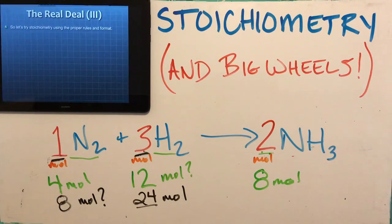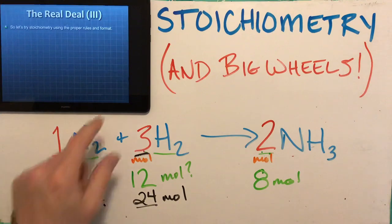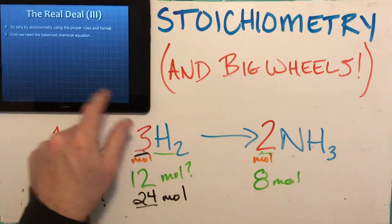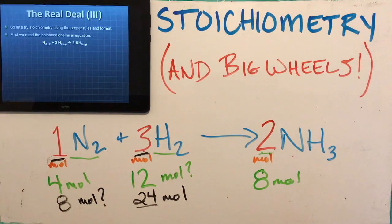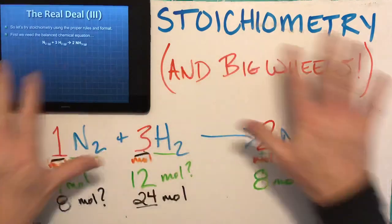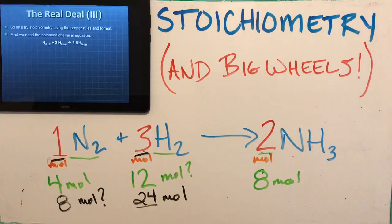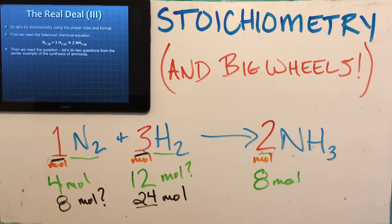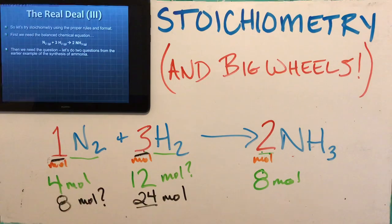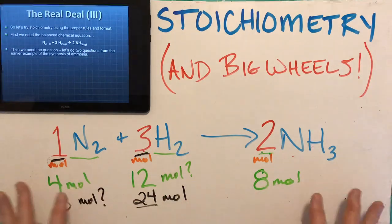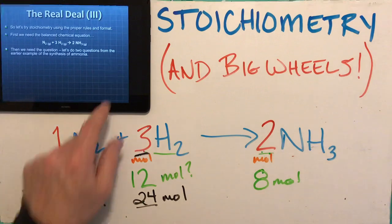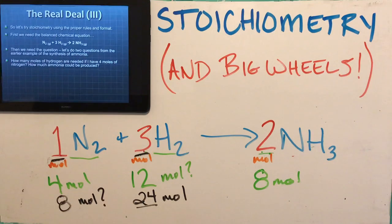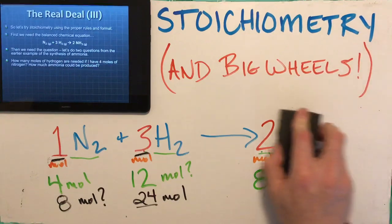We're going to do some stoichiometry using the proper rules and format. Let's get that balanced equation back up here and use the whole board. We'll use the questions from before and show how the math is done — the two earlier questions you already figured out, we're going to do those again, but show the real calculation.